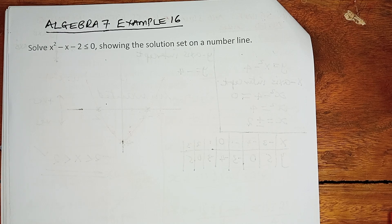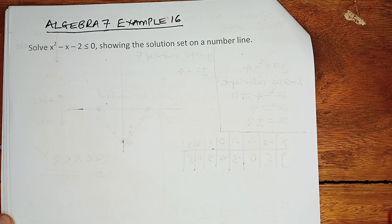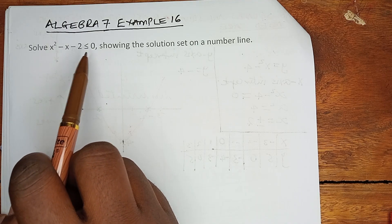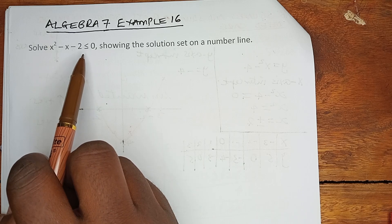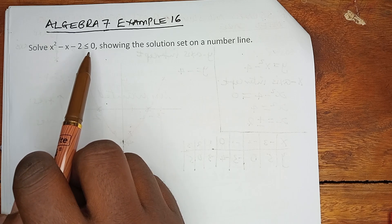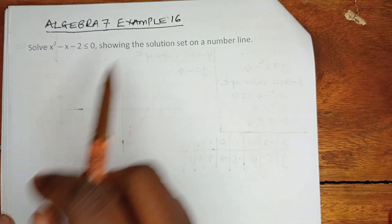In this video we are going to explain example 16 of algebra 7, still under quadratic inequalities. We are told to solve x squared minus x minus 2 is less than or equals to 0, showing the solution set on a number line.